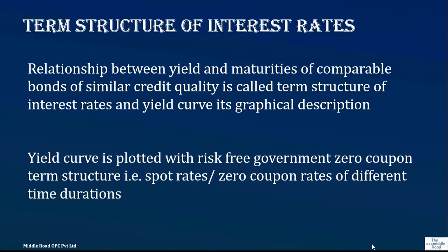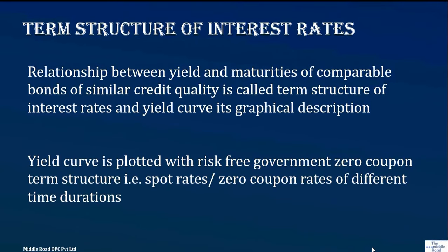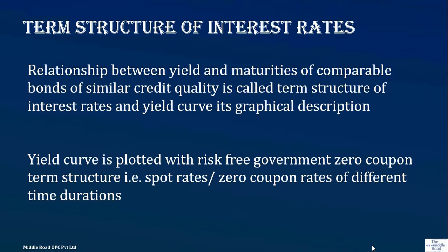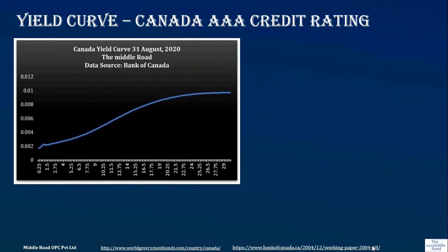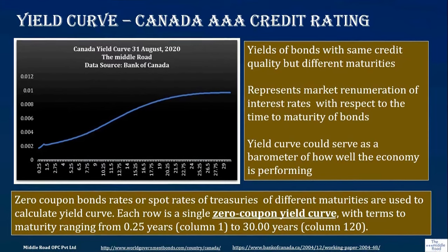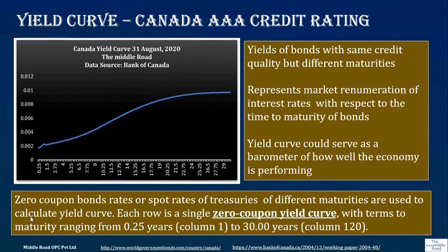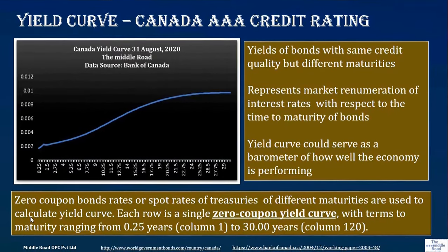There is a lot of discussion about yield curves. The term structure is basically the relationship between yield and maturities of comparable bonds of similar credit quality. When plotting a yield curve, we use spot rates — also known as zero coupon bond rates — of different maturities of Treasuries. Here is the yield curve of Canada from the Bank of Canada, showing spot rates from three months to 30 years. There are generally three types of yield curve: flat, steepening, and inverse.